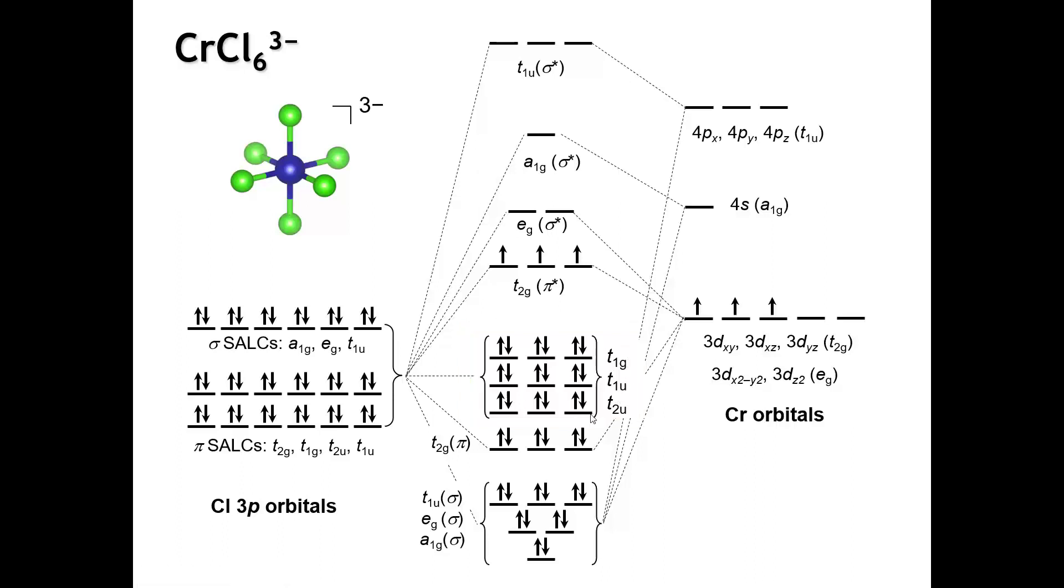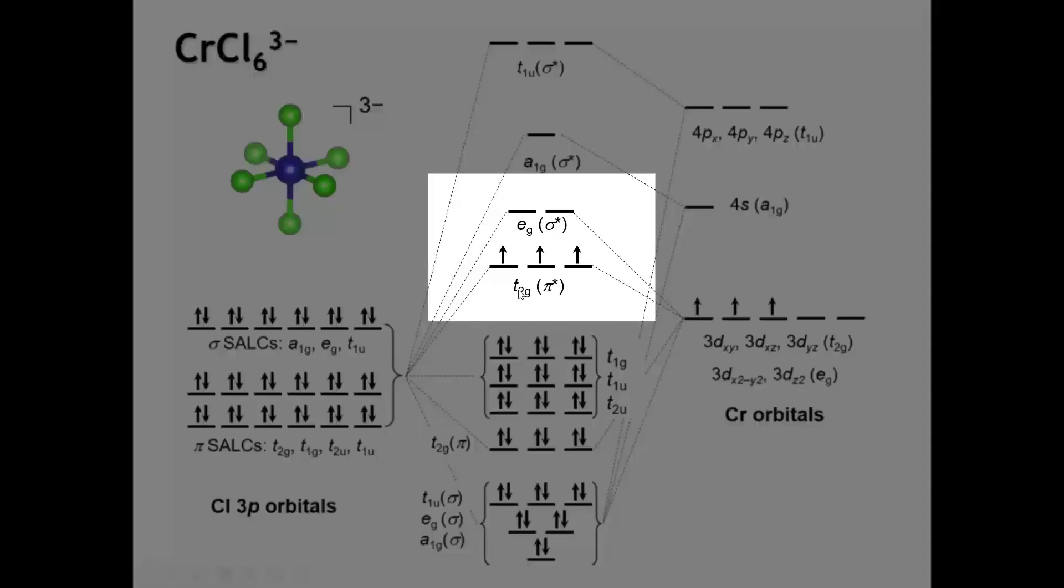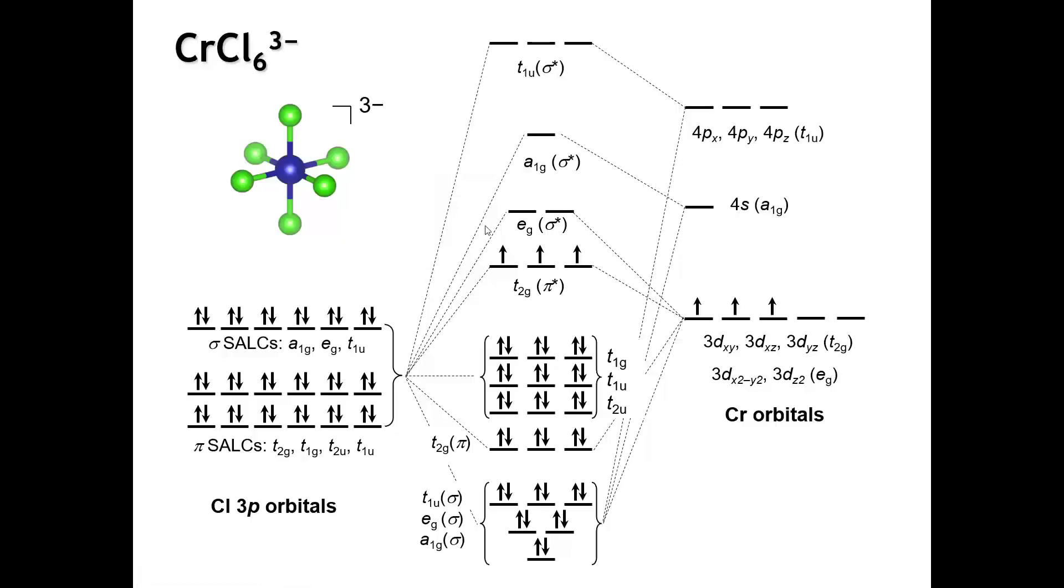This looks like a pretty complicated diagram. But fortunately, most of the time, we're really only interested in the frontier orbitals. When we have transition metals that have some d-electrons still, almost all the action is going to happen in here. Inorganic chemists will probably recognize this T2g-Eg splitting of the d orbitals from crystal field theory. These are the dxy, the dyz, the dxz. They're pi antibonding combinations with chlorine. And these two up here are the d orbitals that point directly at the ligands, the dx squared minus y squared and the dz squared. This diagram is one that we're going to come back to over and over again through the course.